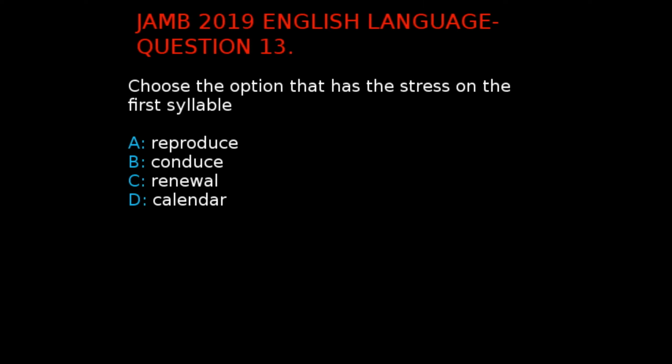Jan 2019 English Language Question 13. The question says, choose the option that has the stress on the first syllable. The options given are: A. Reproduce, B. Conduce, C. Renewal, and D. Calendar. Reproduce has its stress on the second syllable, 'duce'. B also has its stress on the second syllable, 'duce'. C has its stress on the second syllable, 'new'. While D has its stress on the first syllable, 'cal'. The correct answer is D. Calendar, as 'cal' has a longer duration of pronunciation in the word calendar.